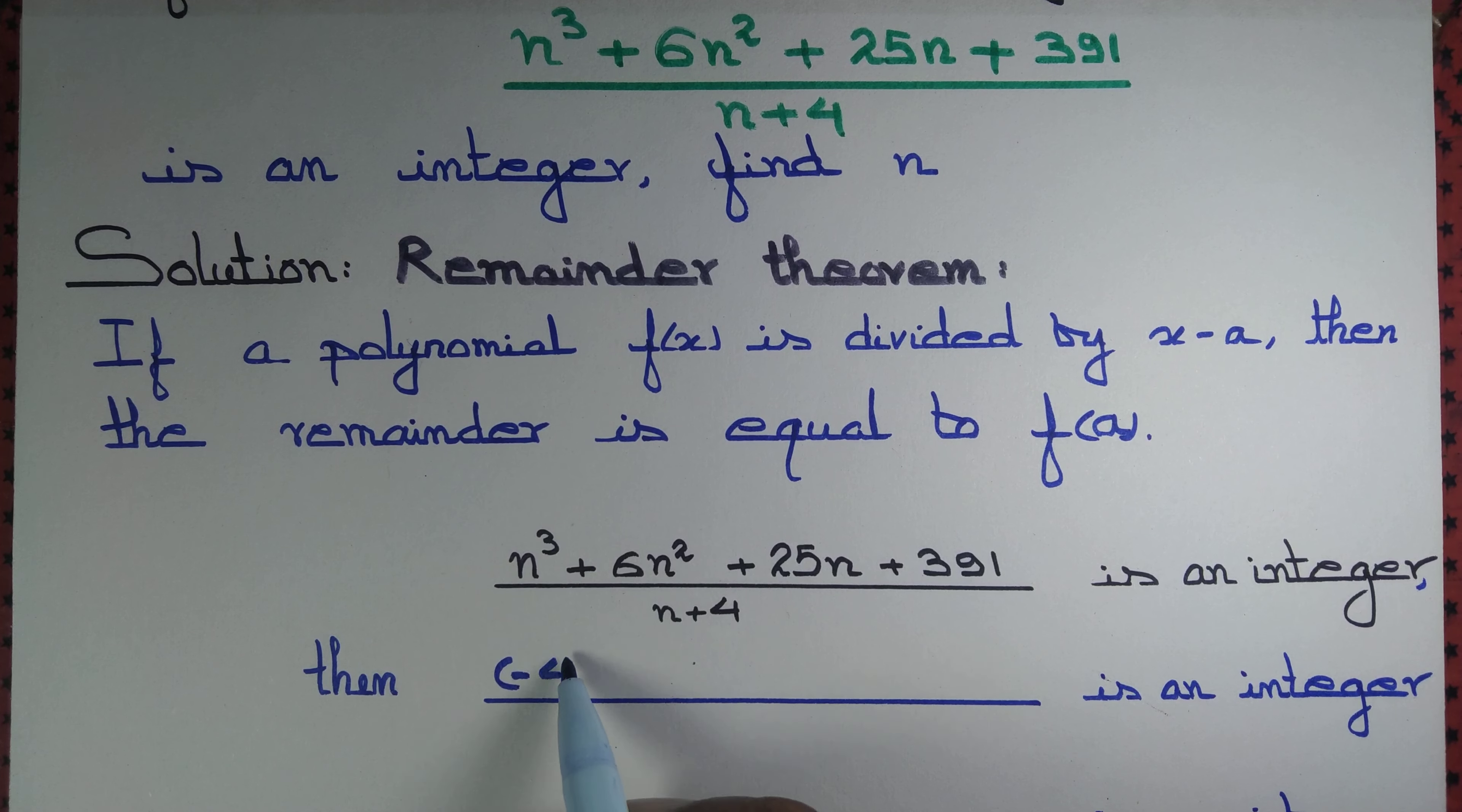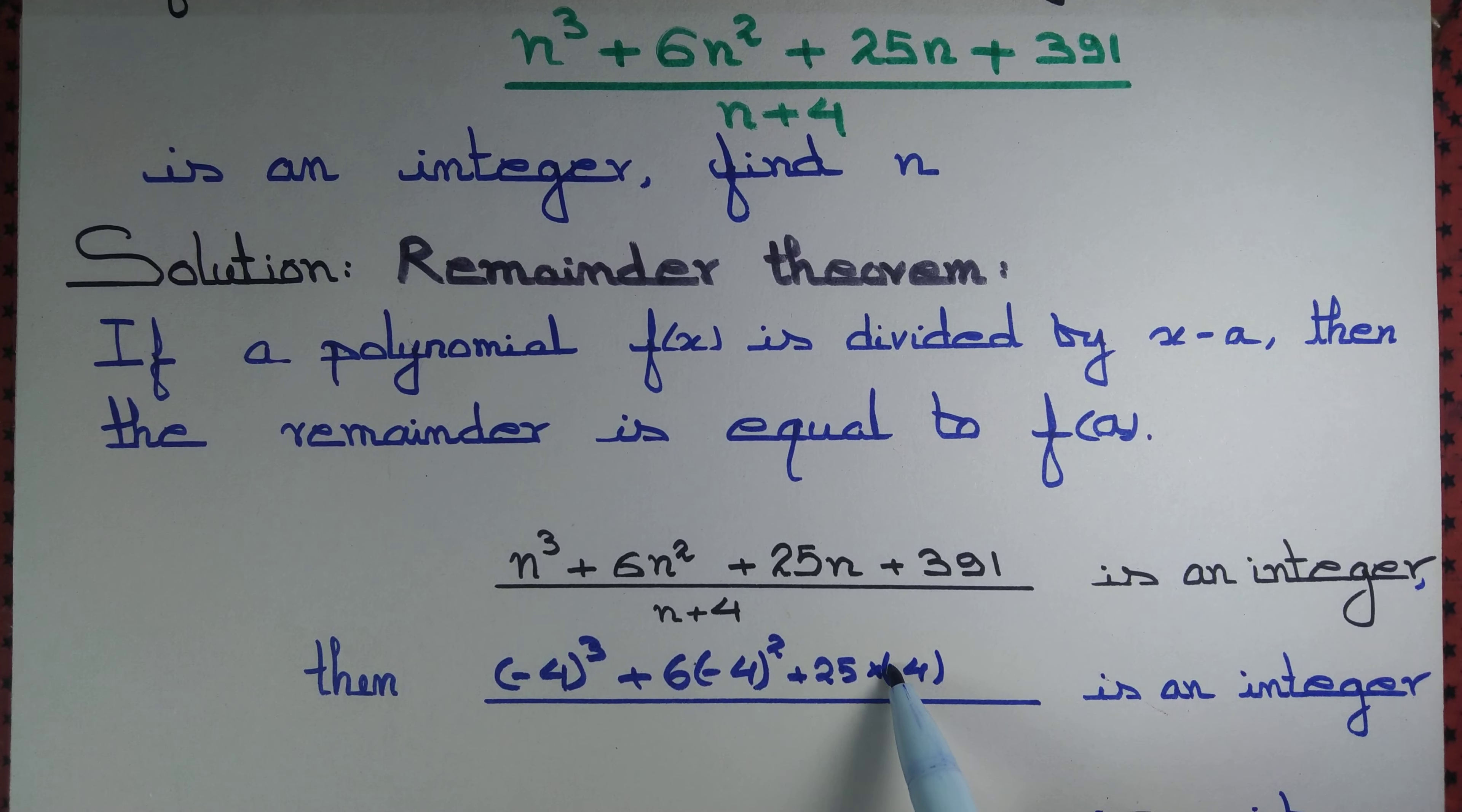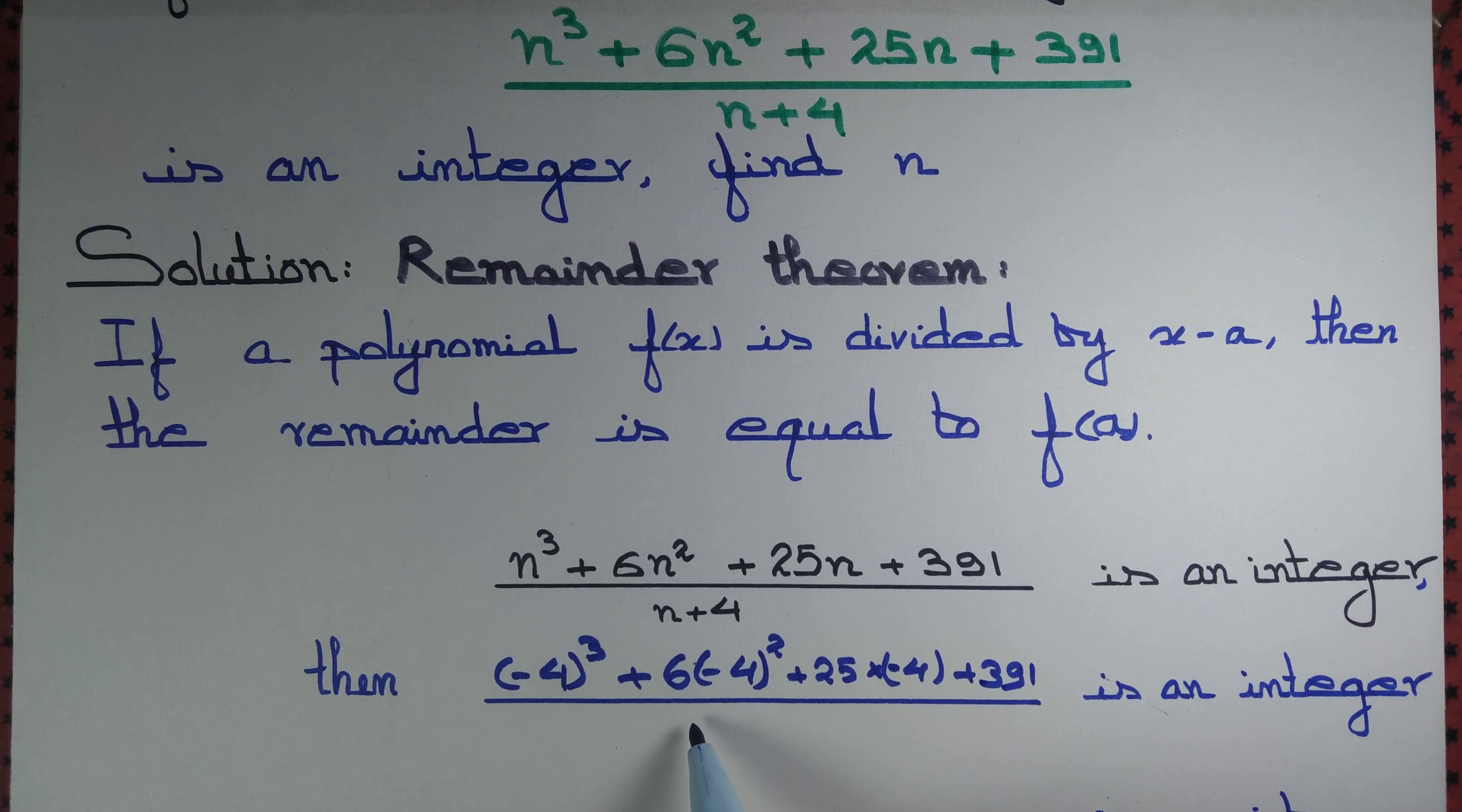minus 4 cubed—that is f of a, in this case a is minus 4—so minus 4 cubed plus 6 into minus 4 squared plus 25 into minus 4 plus 391, divided by n plus 4, is an integer.